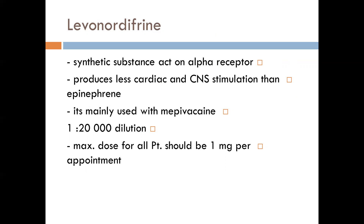Norepinephrine acts on alpha adrenergic receptors rather than both alpha and beta receptors like epinephrine. Its effect on the cardiovascular system shows less cardiac and central nervous system stimulation than epinephrine. It is mainly used with local anesthetic at a dilution of 1:20,000. The maximum dose for all patients should be one milligram per appointment.